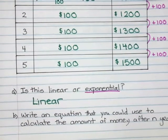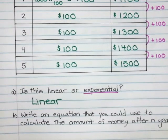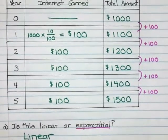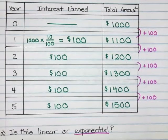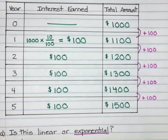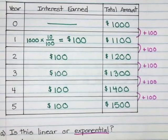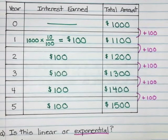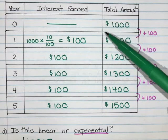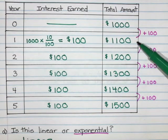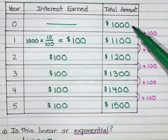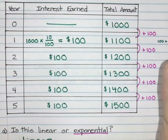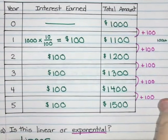Our next question says, write an equation that you could use to calculate the amount of money after N years. So the table is fine, but if he left that money invested for 20 years, I don't want to have to keep making this table longer and longer. So I want to know, is there a way to make an equation that would work for any number of years that I could use to calculate with? I do notice that we started with $1,000 and then we added $100 every single time.